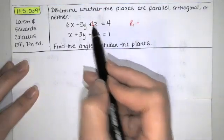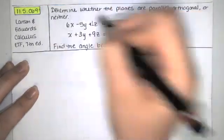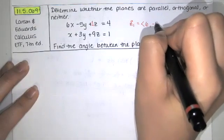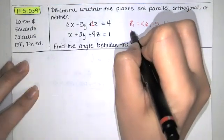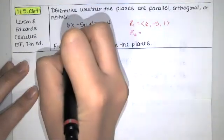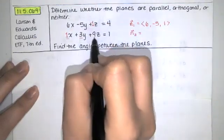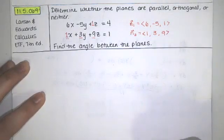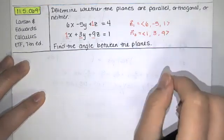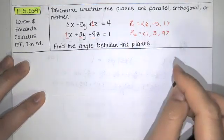So I've got an implied coefficient of 1 there. So the normal vector for this first plane is 6, negative 5, and 1. And then for the second plane we can do the same thing just to identify the coefficients. We've got a 1, a 3, and a 9. So those are the components for that second normal vector.